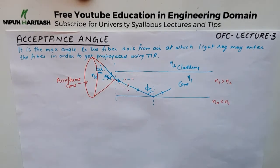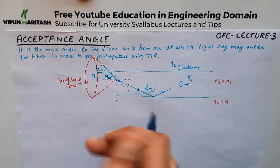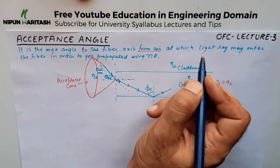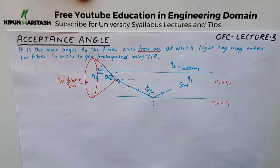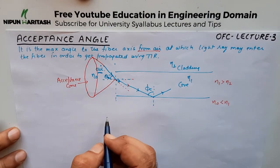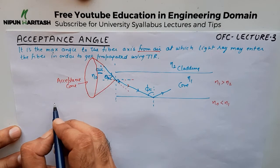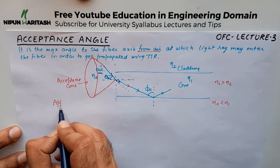The acceptance angle is defined as the maximum angle to the fiber axis at which a light ray may enter the fiber in order to get propagated using total internal reflection. To find the acceptance angle, we need to apply Snell's law at the air-core interface.